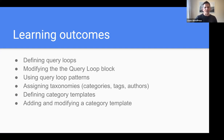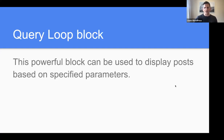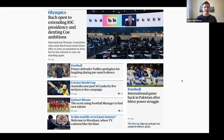We will also define category templates and add and modify a category template. So let's start with the query loop block. The query loop block is a powerful block that can be used to display posts based on specified parameters. They can of course just be normal blog posts, but the query loop block can also be used to display reviews, recipes, or other custom content types.